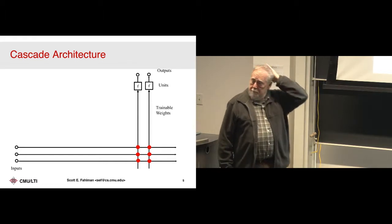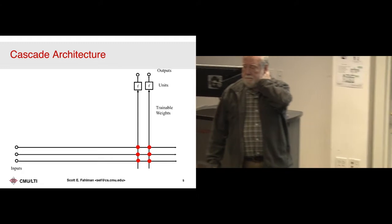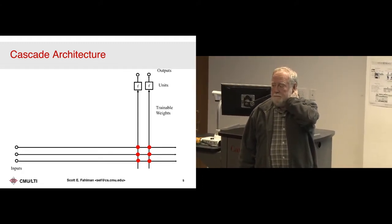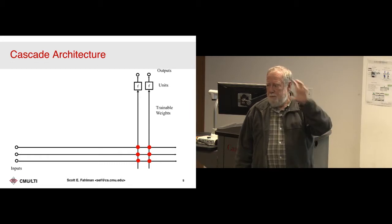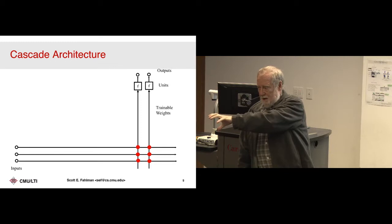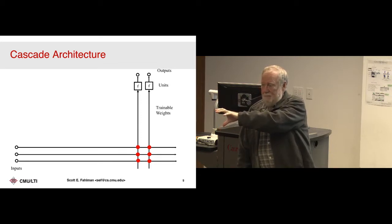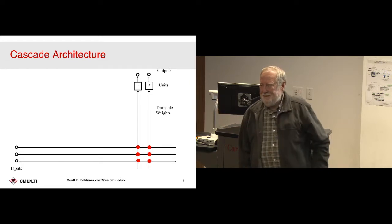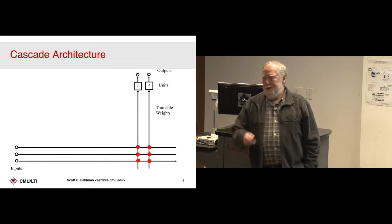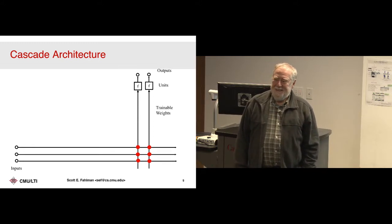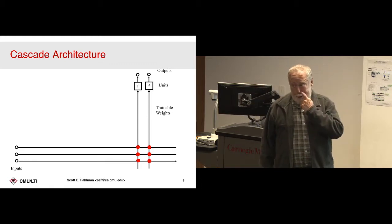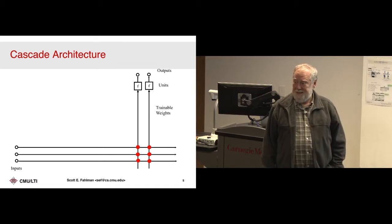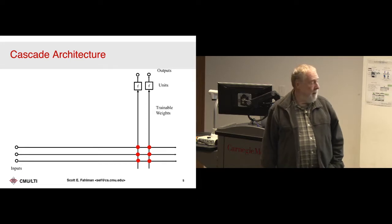Is there some guarantee that if we independently train every unit, the best state for every hidden unit implies the combined state is best overall? This is a greedy algorithm — we're grabbing pieces of the error one at a time in a greedy way. You'd never get an optimality guarantee, but it's damn good in practice. There's no claim of optimality here; there is a claim that it learns pretty fast and produces a near-minimal network.